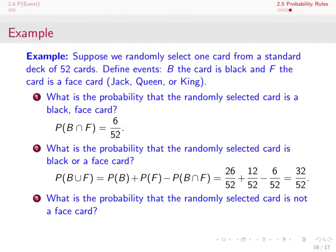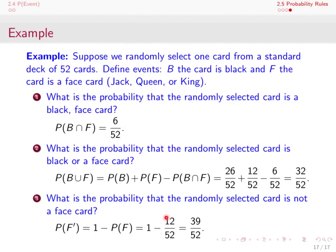Finally, what is the probability that the card is not a face card? We want the complement of F, so we use the complement rule: P(F complement) = 1 - P(F) = 1 - 12/52 = 40/52. This concludes our discussion of some rules of probability. Thank you.